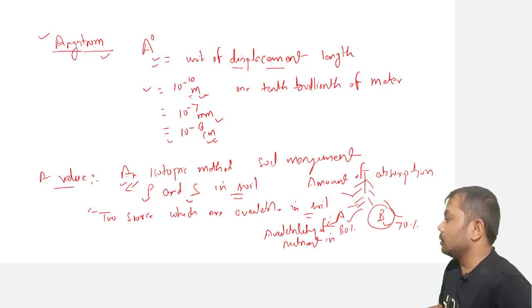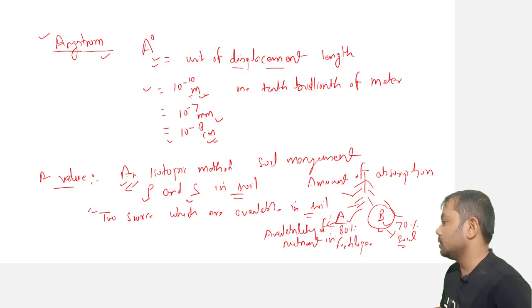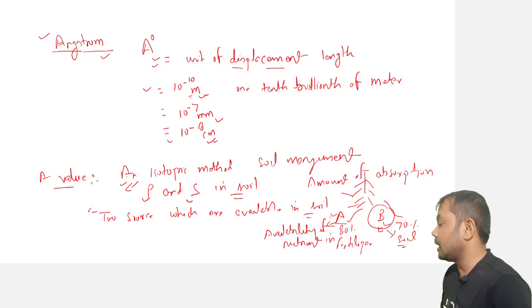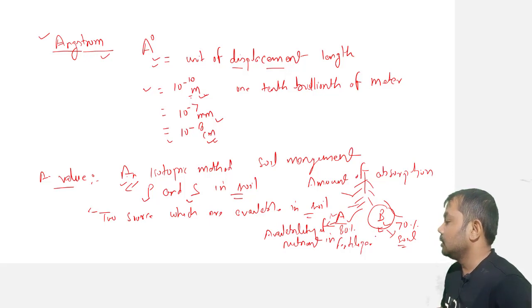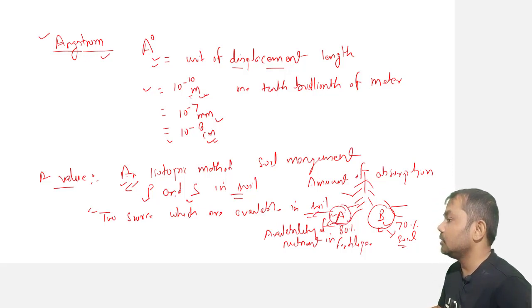When the plant grows in soil, suppose source B is the soil and source A is the fertilizer. When the plant grows, it will confront both fertilizer and soil. The plant will absorb nutrients in proportion to the available form from these two sources. So we can determine the amount of available nutrient in soil.